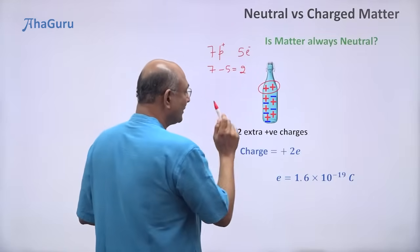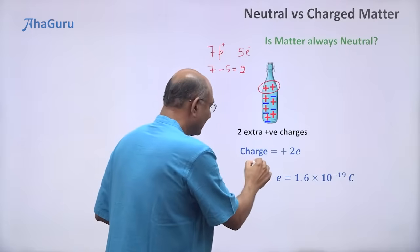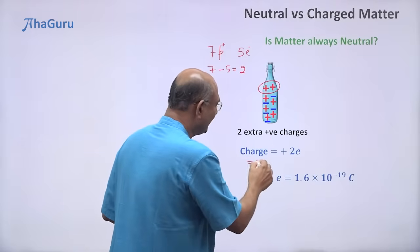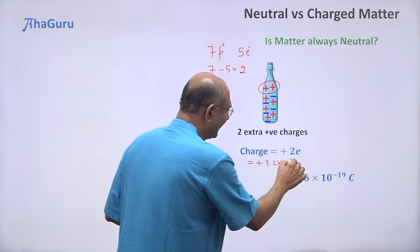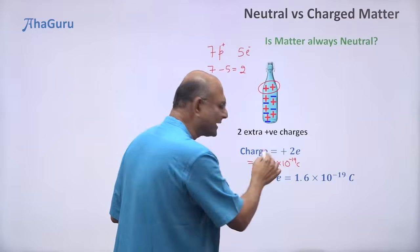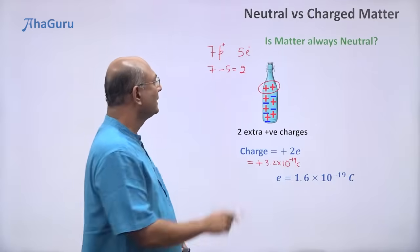So how much charge is there on this bottle? It has two protons. So it has a charge of plus 2E. Of course, you can multiply two with this and you get plus 3.2 × 10^-19 coulombs. But that is a little long to write. So that's why we will say plus 2E.